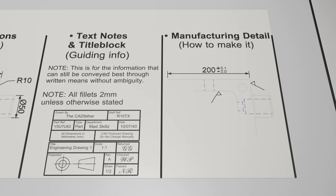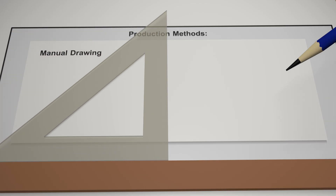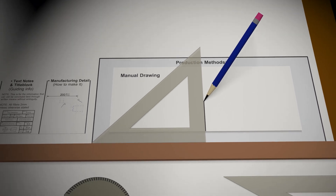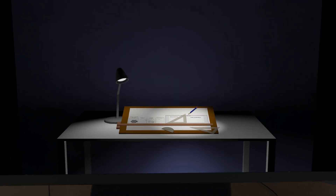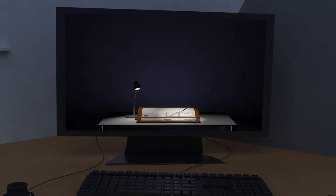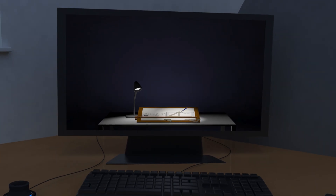Now there are two methods for producing engineering drawings: the traditional manual drawing method, where a series of physical tools on a drawing board will aid the drafter in following the rules we will delve into in more detail as we continue, or using CAD software — a rapidly expanding industry which, due to constantly newfound advantages, is for the most part leaving the traditional methods behind.